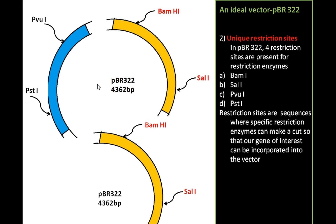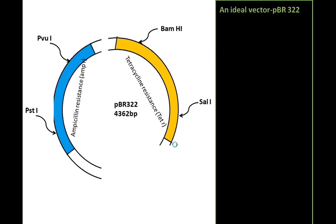Let us take these as an example. Here, we are going to introduce our gene of interest into the BamHI restriction site. We are making a cut using BamHI restriction site and we are introducing our gene of interest there. Restriction sites are sequences where specific restriction enzymes can make a cut so that our gene of interest can be incorporated into the vector.